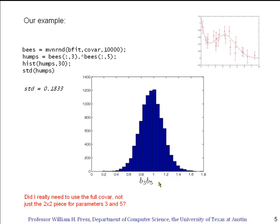Here's a test to see if you understand what we've been talking about on covariance matrices. You can see up here, I used the full covariance matrix. That is to say, this was a 5 by 5 matrix. But I'm only interested in quantities that depend on b3 and b5. So do you think I could have used just the 2 by 2 piece of the covariance matrix for the parameters 3 and 5? I won't tell you the answer to that. I'll let you think about that one.